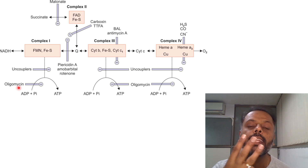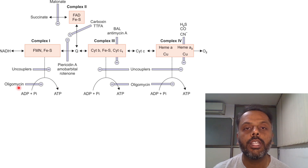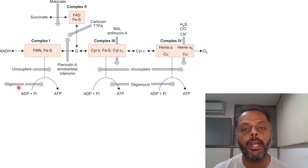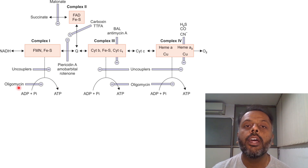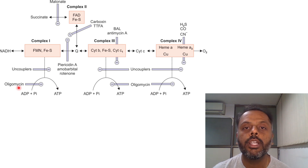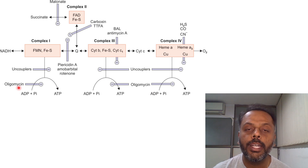The third category is uncouplers of oxidative phosphorylation. Uncouplers act by dissipating the proton gradient across the inner mitochondrial membrane. Examples are 2,4-dinitrophenol, dinitrocresol, and aspirin in high doses. Physiological uncouplers include long-chain fatty acids, unconjugated bilirubin, thermogenin, and thyroxine.